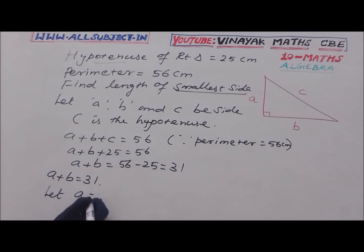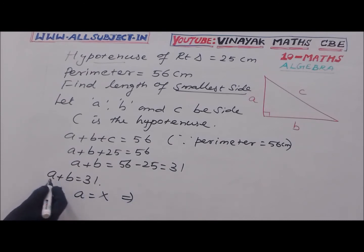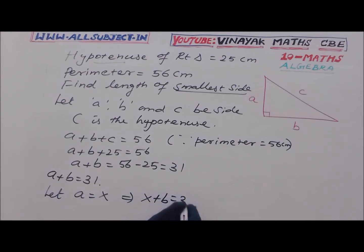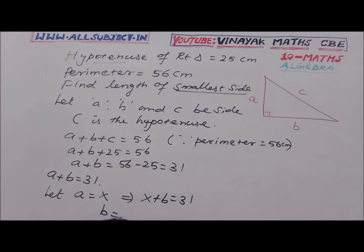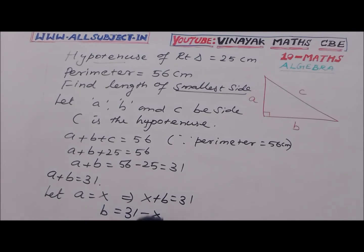Let A equal to X, which implies X plus B equals 31, so B equals 31 minus X.